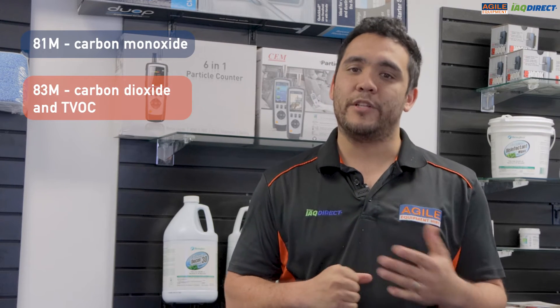You might ask me what's the difference between the 81M model and the 83M model. In short, the 81M can read carbon monoxide levels, whereas the 83M can read carbon dioxide levels and total volatile organic compounds or TVOCs. Past this, the meters share the same functionality.